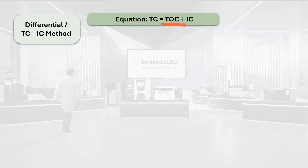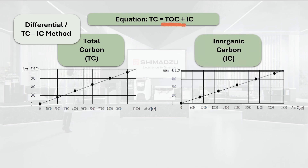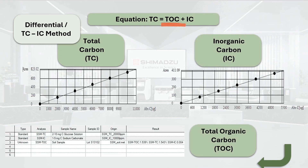To determine TOC content in a solid sample, the differential method is used. In this method, the sample TC content and IC content are obtained from the calibration curve. The TOC value can then be obtained by subtracting the IC value from the TC value. This is how we measure TOC in solid samples using the SSM.